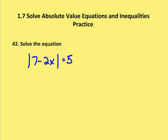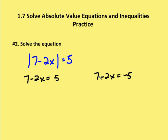Now in this question, they're asking us to solve the equation. We're going to rewrite this as two equations, similar to how we did in the first problem. So I have 7 minus 2x is equal to 5, and 7 minus 2x is equal to negative 5.